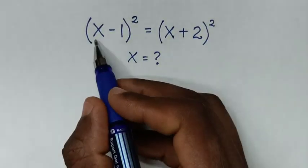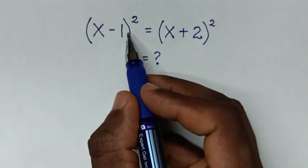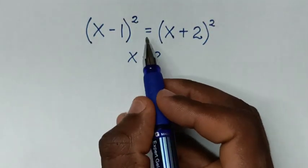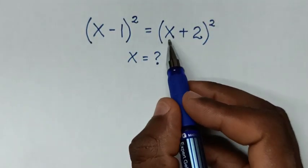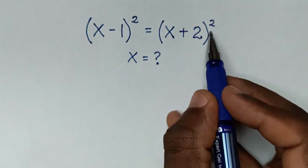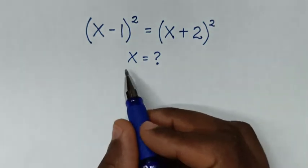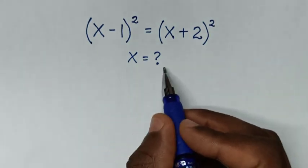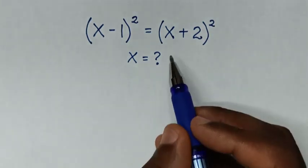Hello. How to solve (x minus 1) squared is equal to (x plus 2) squared, to find the value of x from this equation.